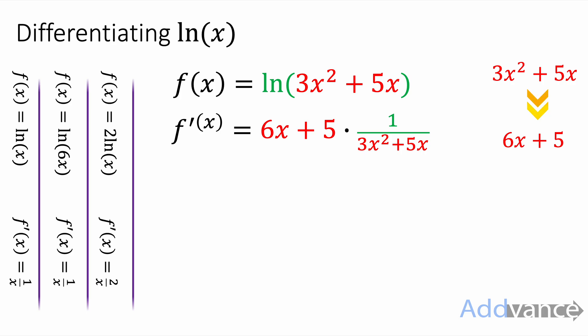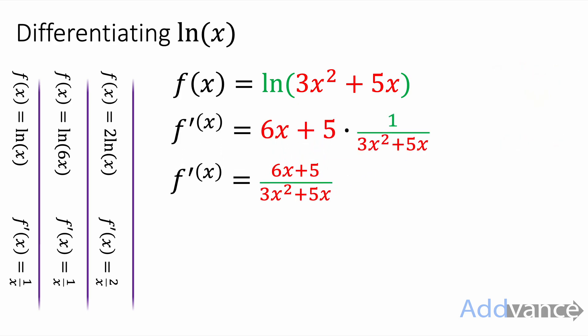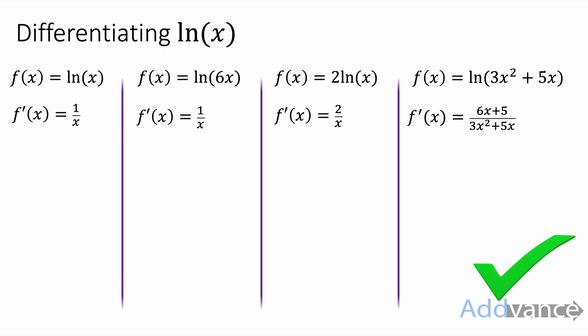So the logarithm has differentiated to be 1 over what's in the bracket - 1 over 3x squared plus 5x. And then we multiply that by the derivative of the bracket. And we get this. Just multiplying the fractions together multiplies the numerator. And we get 6x plus 5 over 3x squared plus 5x. And that's it. We have differentiated the logarithms.